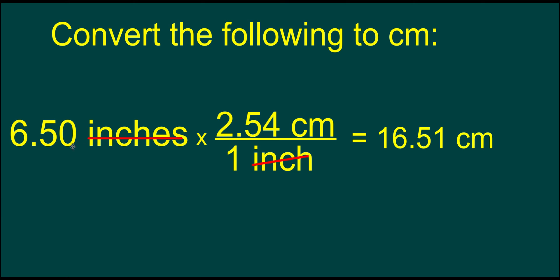If we go back and look at the original number that was given, this says 1, 2, 3 significant digits. Our final answer is 1, 2, 3, 4. So our final answer has to reflect the least number of significant digits from the question, which means the final answer should be 16.5 centimeters. So 6.5 inches is equivalent to 16.5 centimeters.